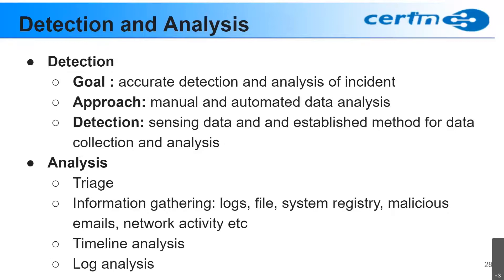Based on the evidence collected, we perform a timeline analysis — determining when the incident was first reported and when it first occurred. Through this timeline analysis, we find the appropriate conclusion about why the incident happened. This is called root cause analysis, and we also identify the set of Indicators of Compromise (IOCs).